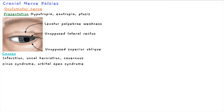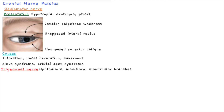Causes include infarction — a stroke or microvascular hemorrhage in that area — uncal herniation if there is raised ICP with herniation into the infratentorial area, cavernous sinus syndrome because the oculomotor nerve runs through the cavernous sinus, and orbital apex syndrome where other cranial nerves may also be affected.